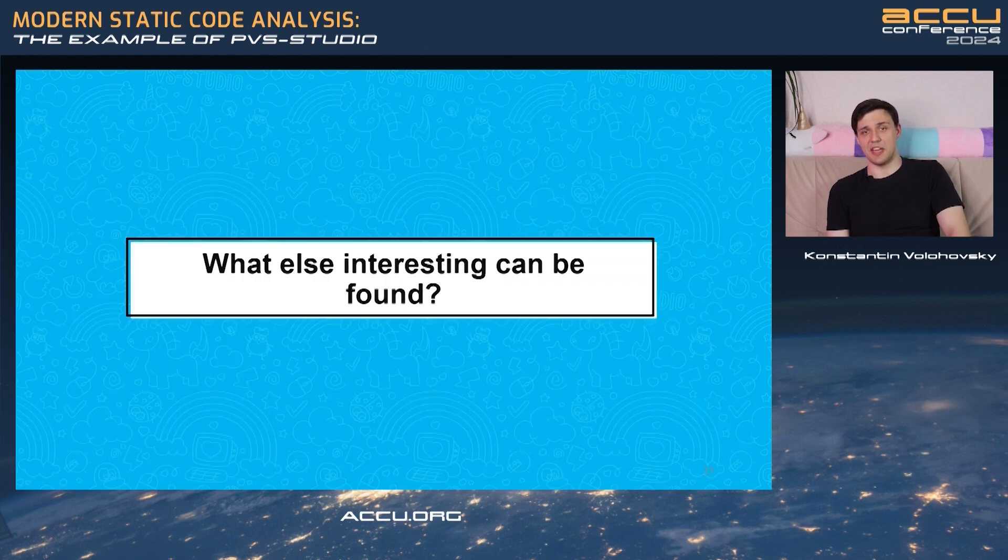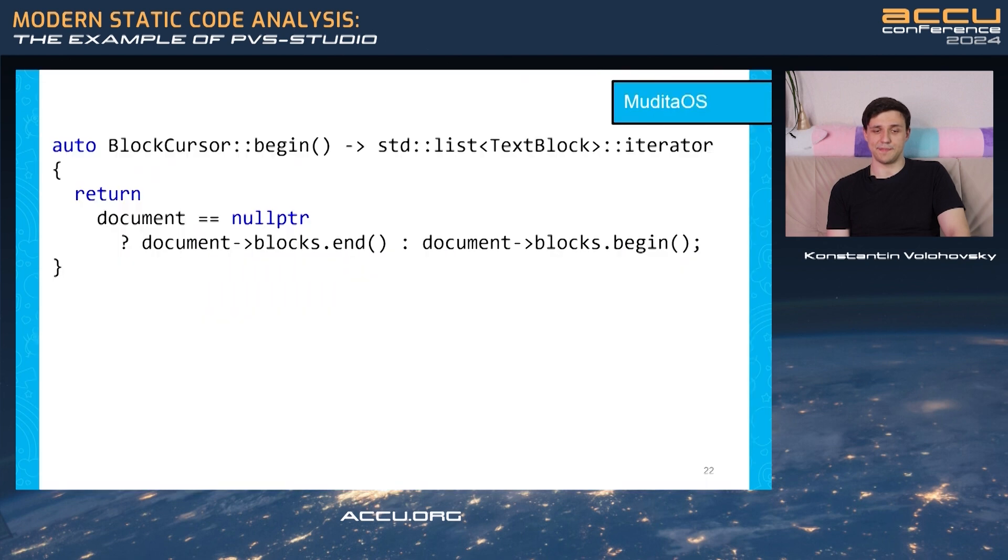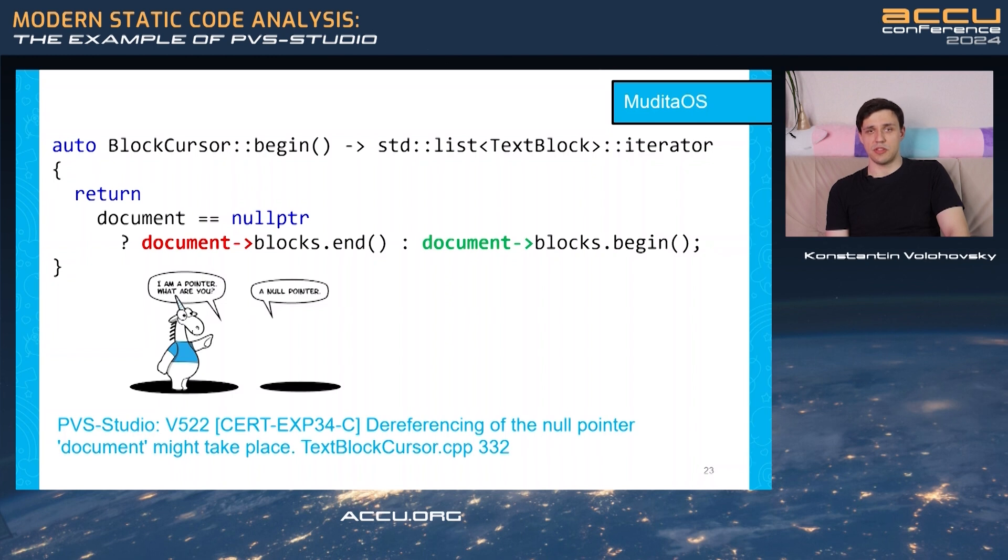Okay, let me show you more interesting errors that we are able to find. Consider this, just one ternary operator. But developer, the references, this variable right after checking it against null pointer. Pretty silly mistake. What else do we got?